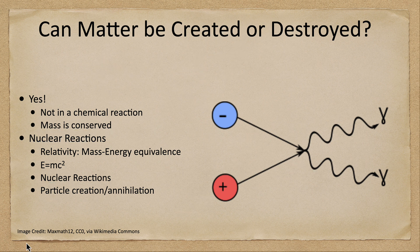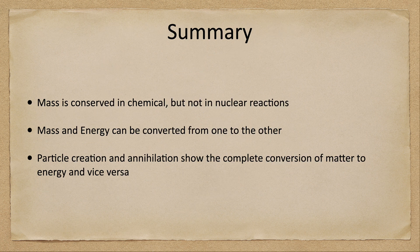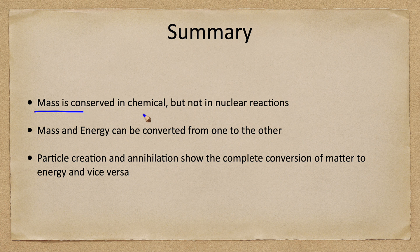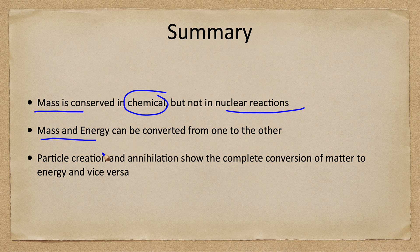So let's go ahead and finish up here with our summary. What we've looked at is that mass is conserved in chemical reactions but not in nuclear reactions. Mass and energy can be converted from one to the other through Einstein's equation E equals mc squared. And we can have particle creation and annihilation which show the complete conversion of matter to energy and vice versa.